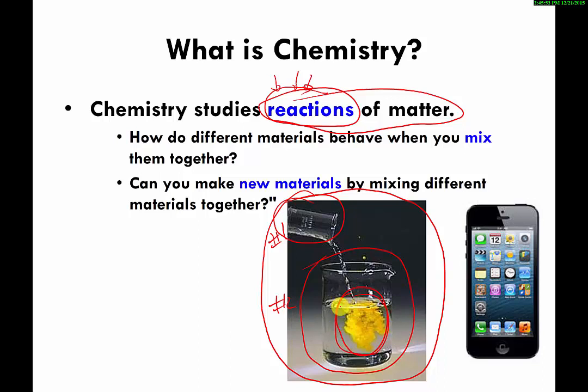But that doesn't happen. A little bit of a surprise—you get this yellow gunk that's made. And because you get something maybe you wouldn't expect, you get a new material, I'm gonna call that a chemical reaction. So chemists are interested in trying to figure out how different material objects interact or react with each other to make new things.